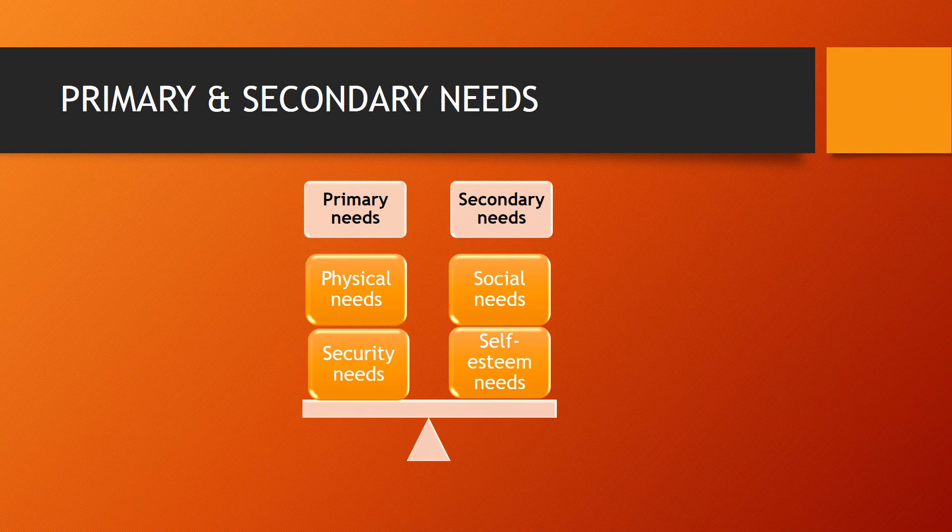Needs are put in two categories. The first category is primary needs, which entails physical needs and security needs. The second category is secondary needs, and these entail social needs and self-esteem needs.